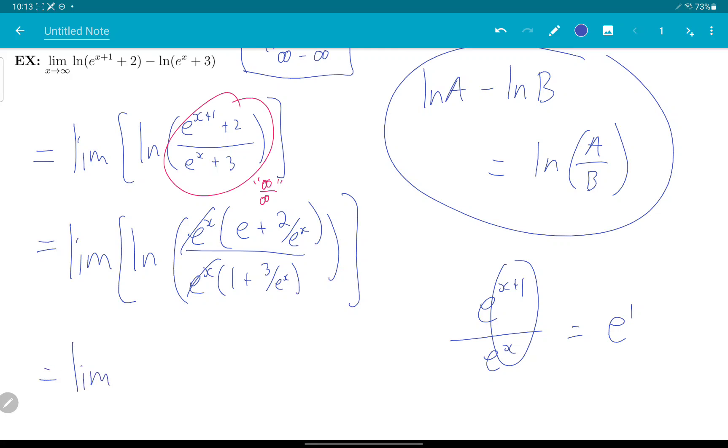So, now I can do my limit. I'm going to get just ln of e plus 0 over 1 plus 0. Since I hope you agree e to the x in this scenario goes to infinity.